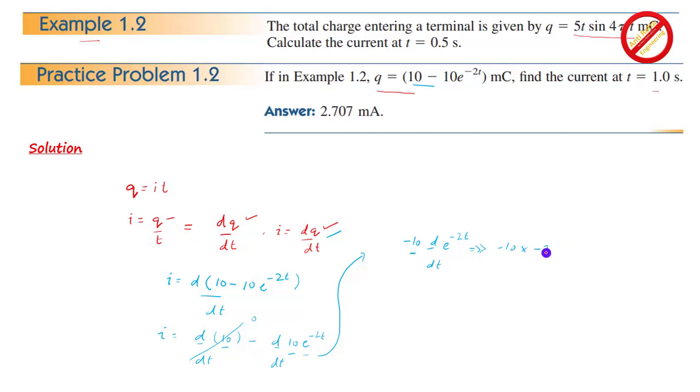This is minus 2 and this is the value of x. And exponential x is the same. So this is the value of exponential minus 2t. This is minus and minus gives plus 20 exponential minus 2t.